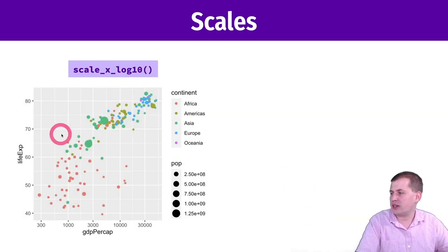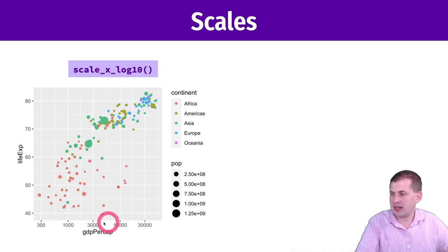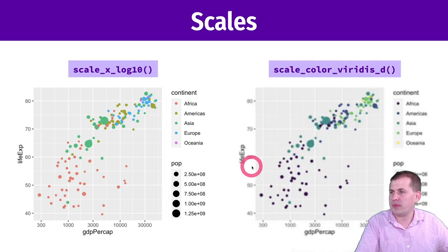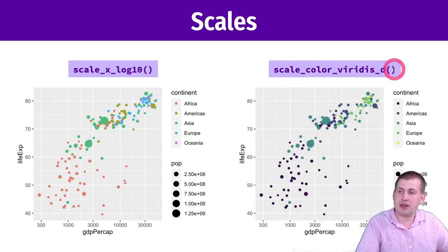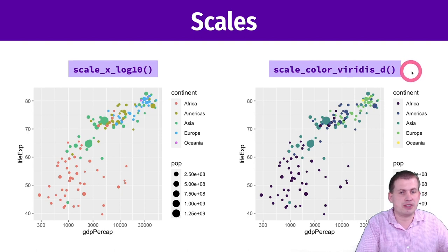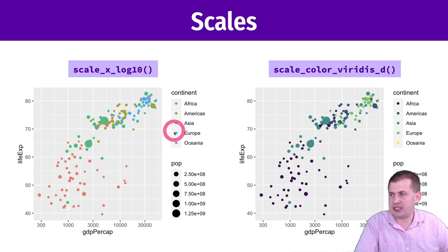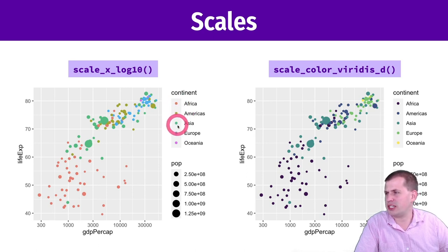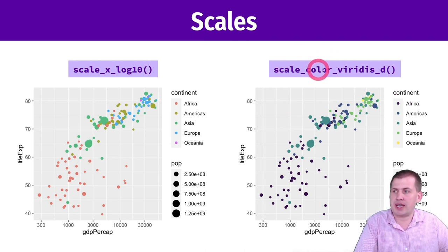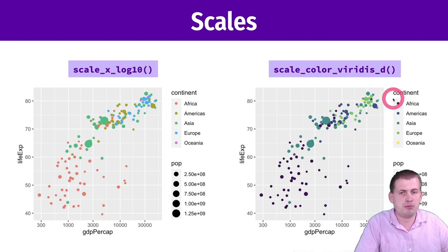We already saw this with the gapminder data using the log10 axis. If we want viridis coloring, we just add the scale_color_viridis layer and it changes. The default ggplot colors are pink, yellowish, and turquoise-ish. All we have to do is add that one layer and it switches to the viridis scale, which is pretty nice.